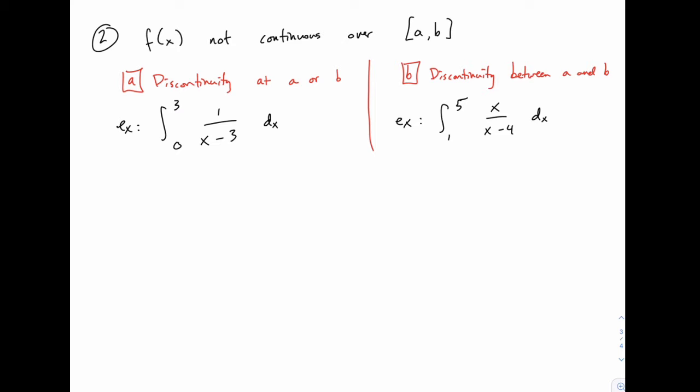The other category, this one, is when the function might have discontinuities along the interval where we're integrating. So somewhere in the interval from A to B, there can be a discontinuity, or multiple discontinuities, potentially. But as long as we can deal with one, we can deal with multiple ones as well by splitting it up into multiple pieces.